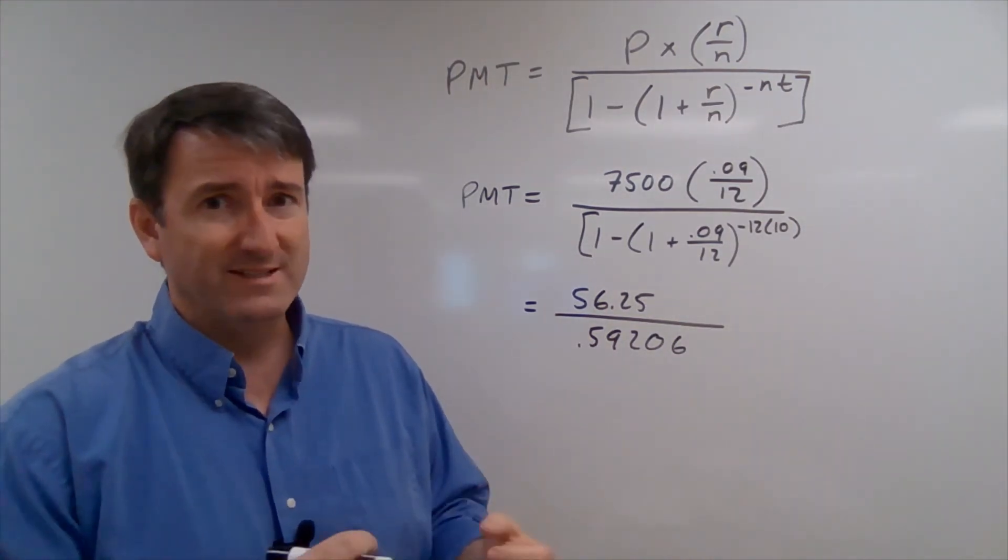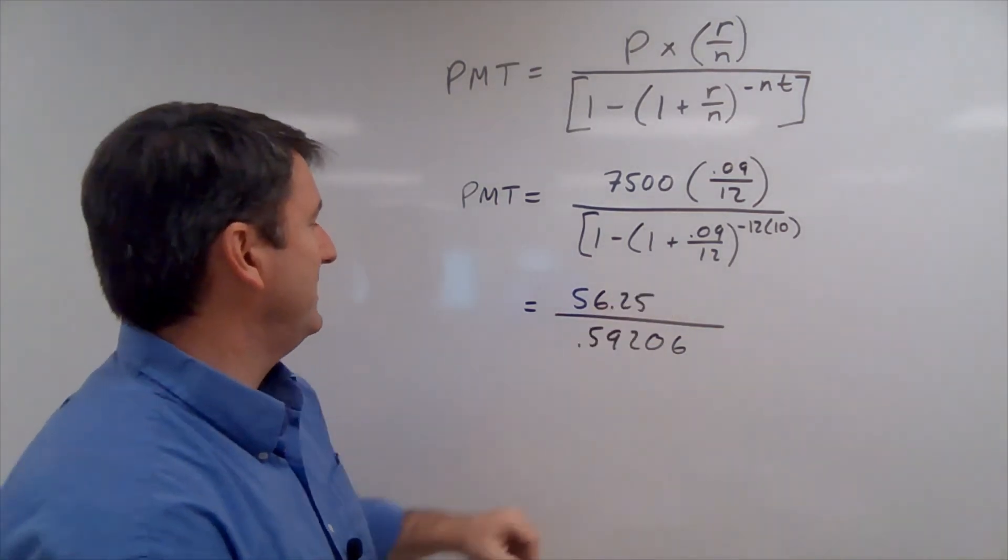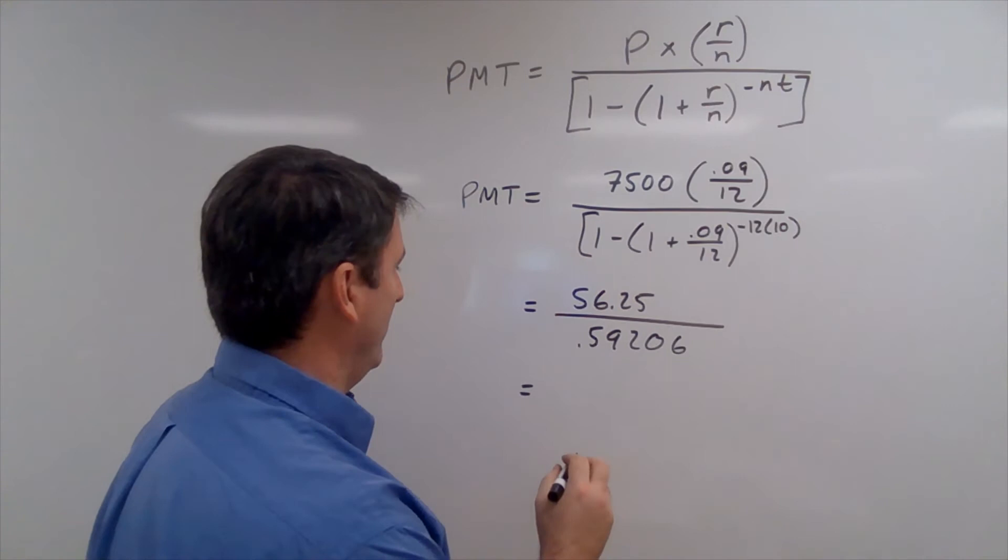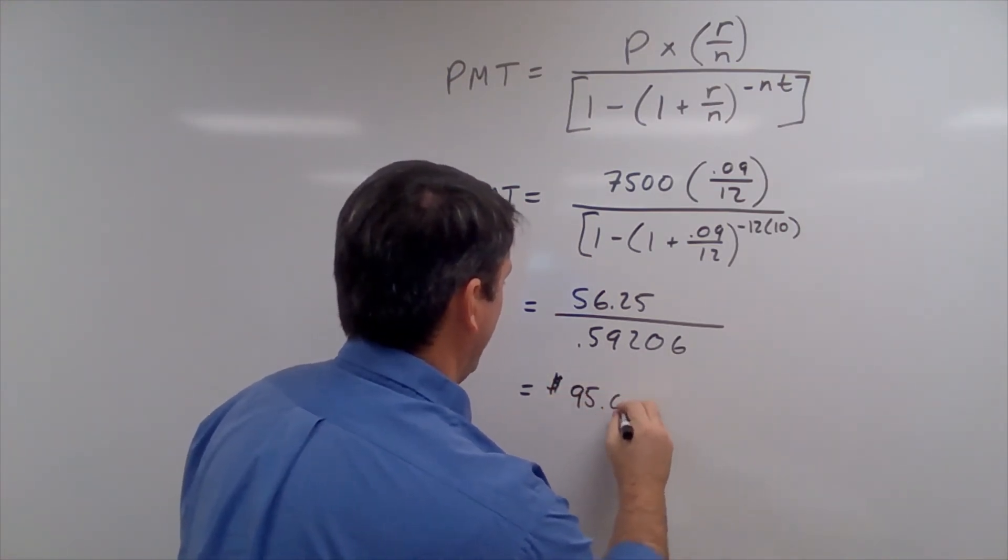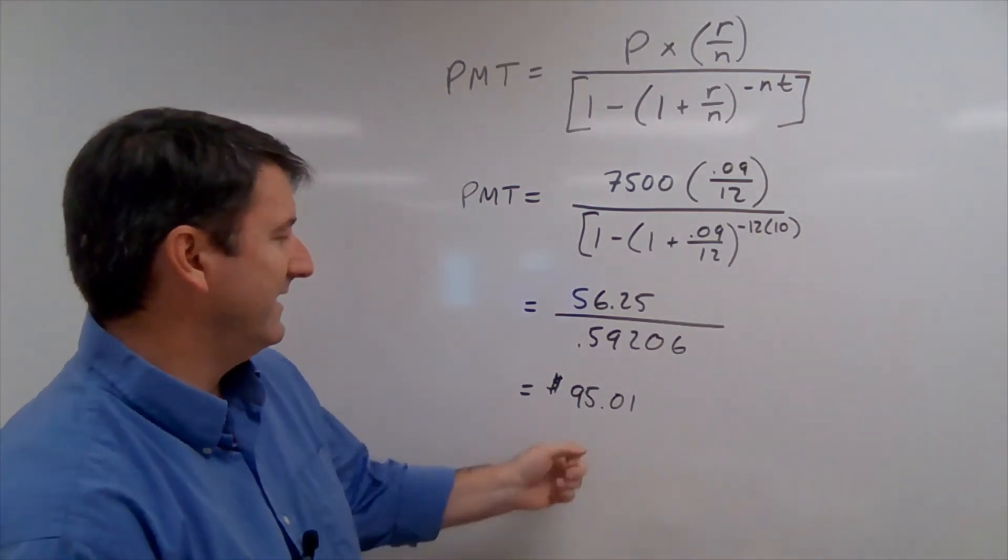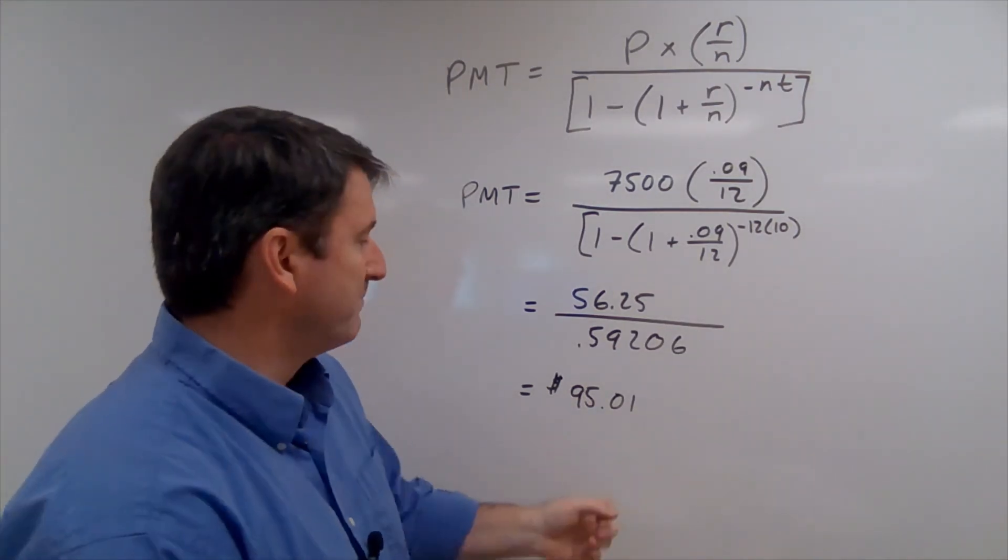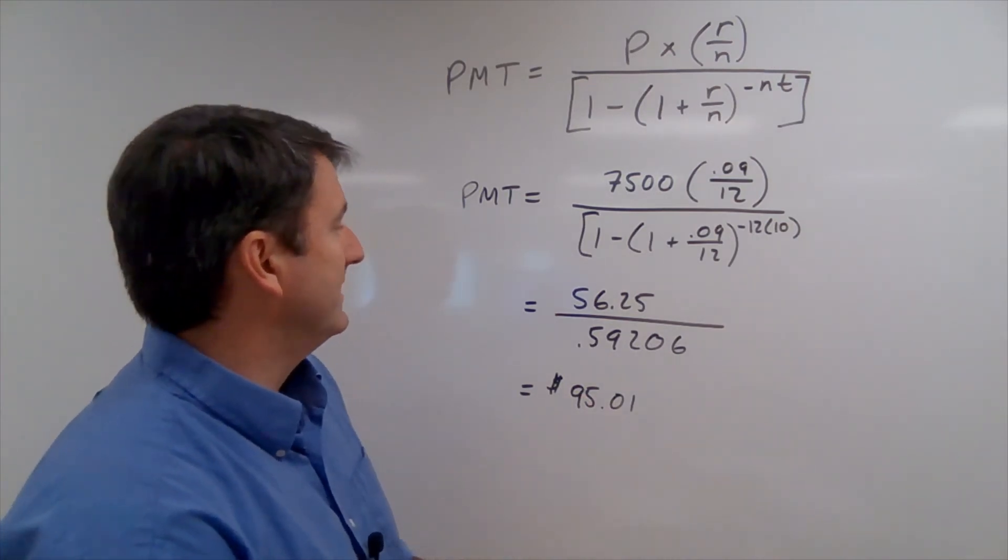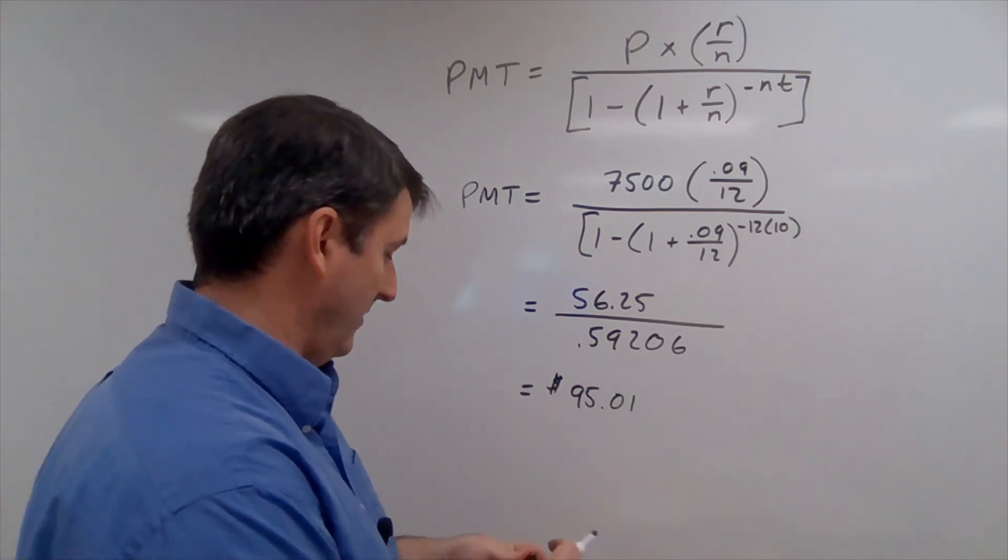We want to round as little as possible in the middle of a problem. And if we do this, we're going to end up with a monthly payment of $95.01. It comes out to 95.006 something, and so we're going to round up to $95.01. And that's going to be our monthly payment on this student loan.